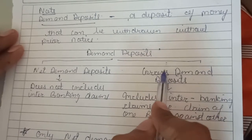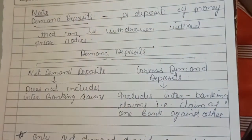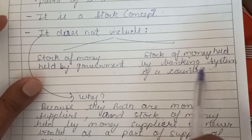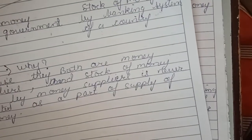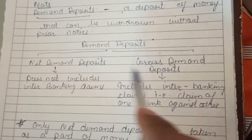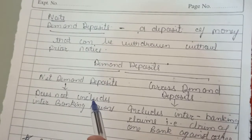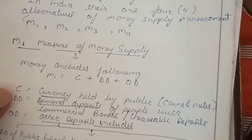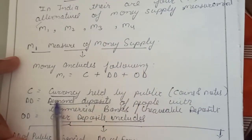We do not use gross demand deposits because we already established that we are not including the stock of money held by the banking system. Since inter-bank deposits are money of one bank kept with another bank, they belong to the banking system and hence are excluded from supply of money calculation.